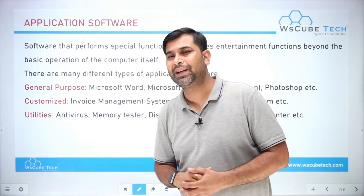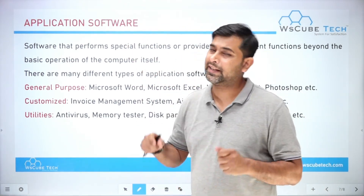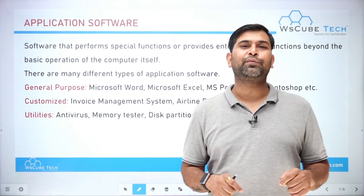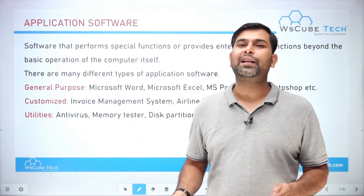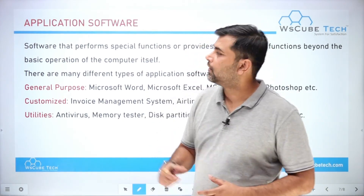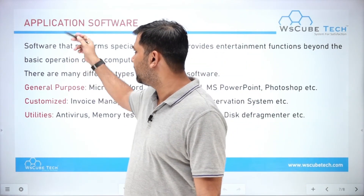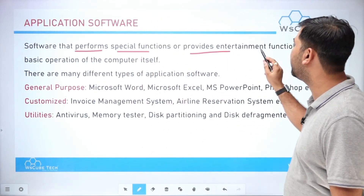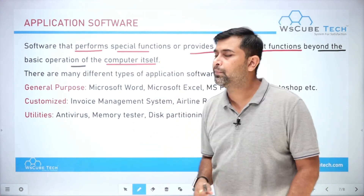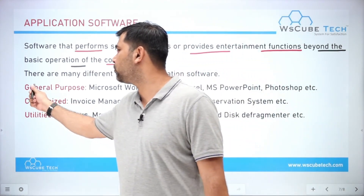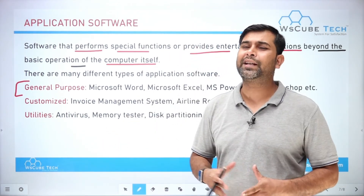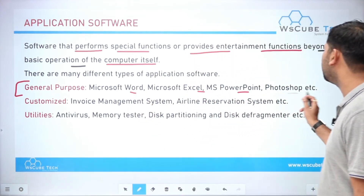Now, if we talk about application software, this is a specific type of program designed to perform a special work or specific task — such as games, movies, documents, spreadsheets, presentations, or photo editing. Application software performs specific functions or provides entertainment beyond the basic operation of the computer itself. One type is general purpose software — software that everyone commonly uses, like Word, Excel, PowerPoint, and Photoshop.